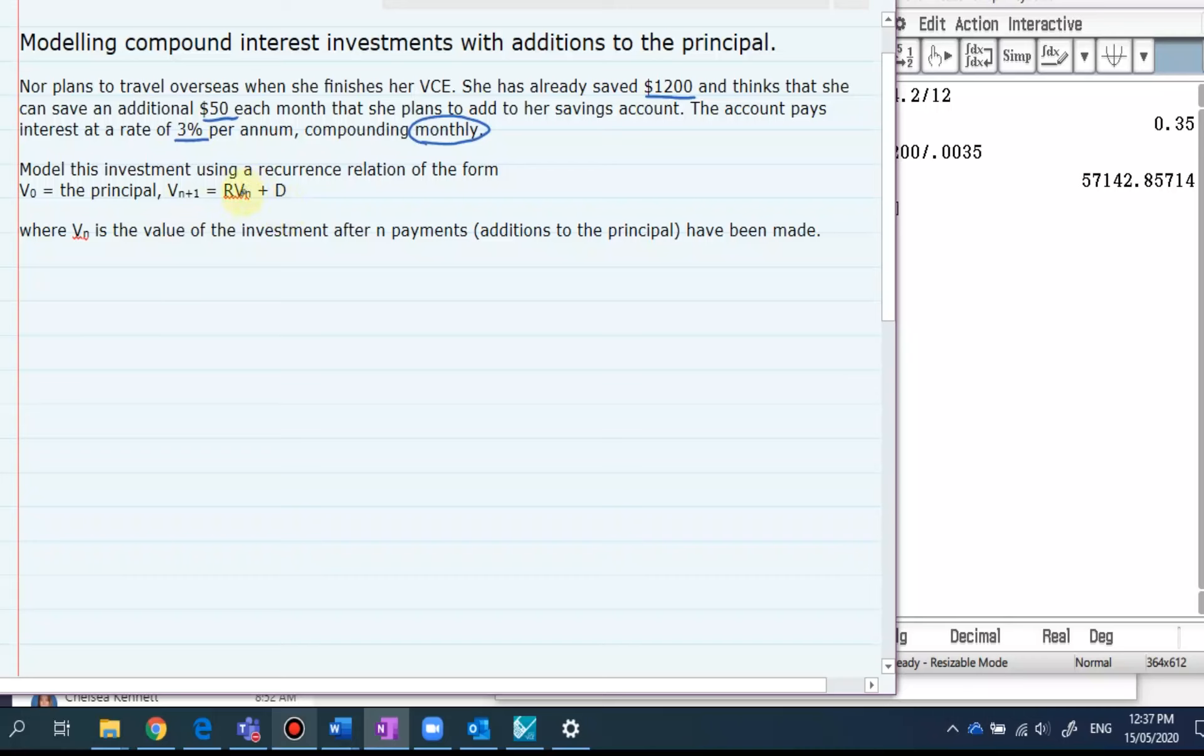All right so we're just setting up the recurrence relation to show what's happening here. First off as per standard if you've watched some of the other videos, we've got V0 which is the principal, your starting value. Then the rest of the recurrence relation is made up of the rate of change times whatever the previous value was plus D.